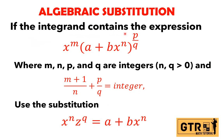If the integrand contains the expression x to the m times (a plus b times x to the n) raised to p over q, where m, n, p, and q are integers with n and q greater than 0, and (m+1)/n + p/q equals an integer, then we use the substitution x to the n times z to the q equals a plus b times x to the n.